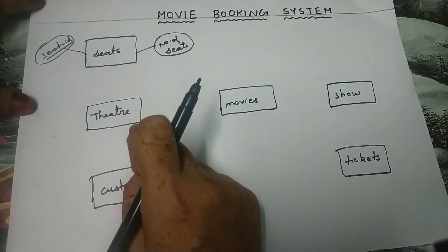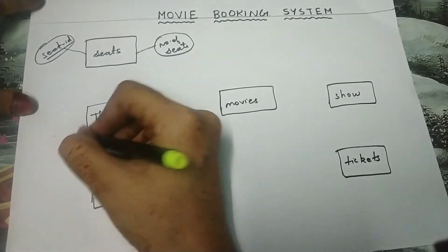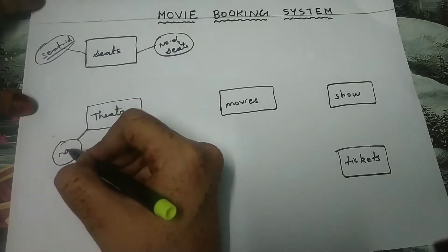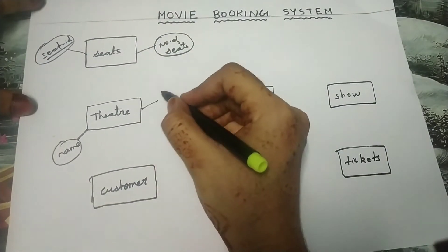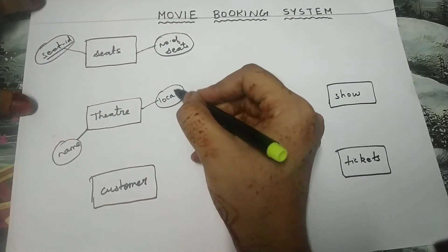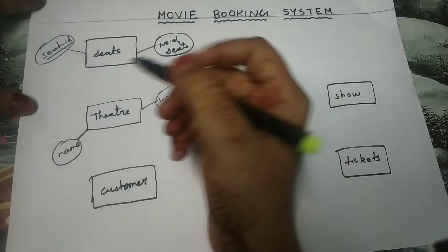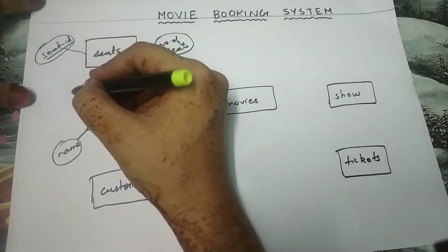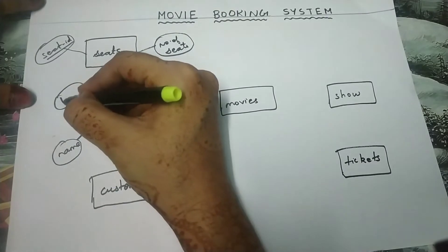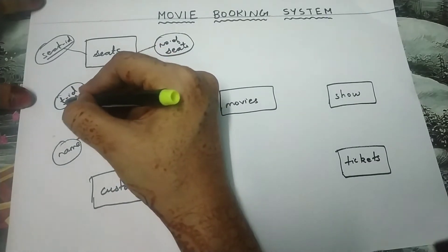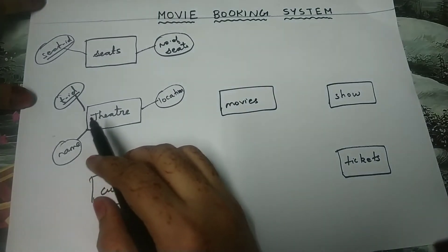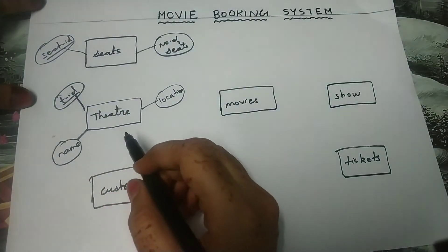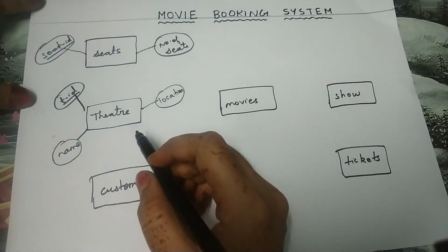The attributes of theatre are: the name of the theatre, the location of the theatre, and the theatre ID. The theatre ID must be underlined because it is a primary key — every single theatre will have a different ID.